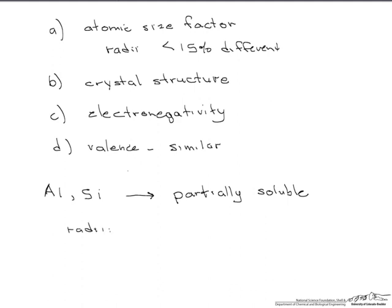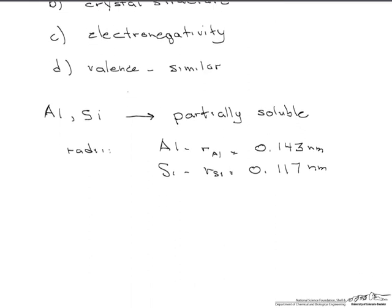First, let's look at atomic radii. Aluminum has a radius of 0.143 nanometers. Silicon has a radius of 0.117 nanometers. They are obviously different.